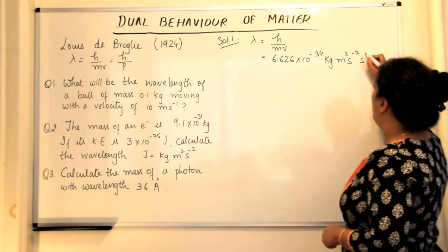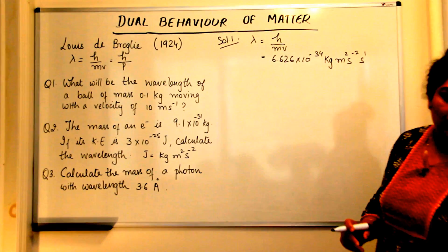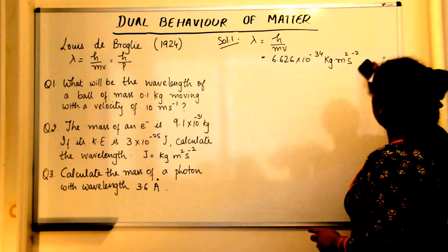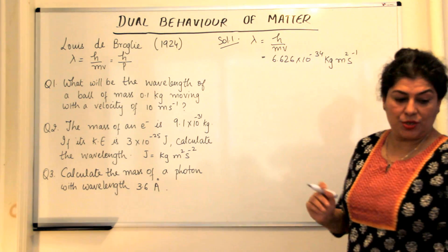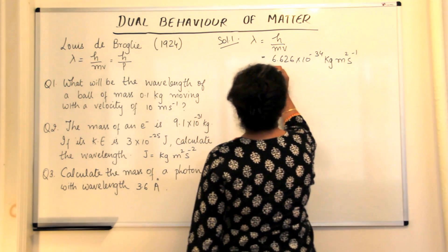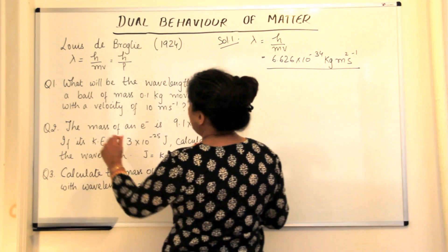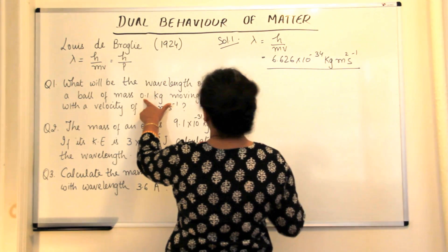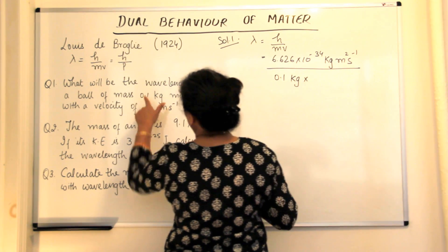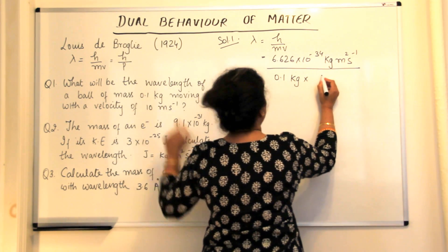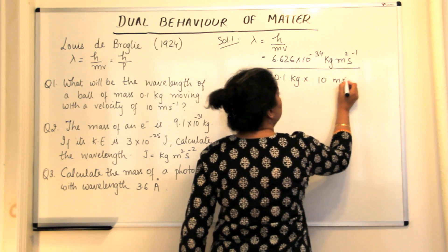So second 1 and minus 2, that is plus 1 and minus 2 would become minus 1. So we could do this just simplifying it a little here and this would be divided by mass. The mass is given to us 0.1 kg into the velocity that is 10 meters per second.